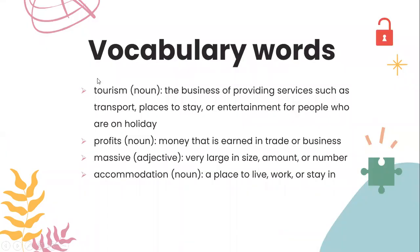Here are the vocabulary words. The first one is tourism — it's a noun, the business of providing services such as transport, places to stay, or entertainment for people who are on holidays. The second one is profits — a noun, the money that is earned in trade or business. Then massive — it's an adjective, very large in size, with the same meaning as enormous. And accommodation — it's a noun, a place to live, work, or stay in. An accommodation can be a bedroom, an apartment, or a hotel room — as long as it's a place to live, work, or stay in, it is called an accommodation.